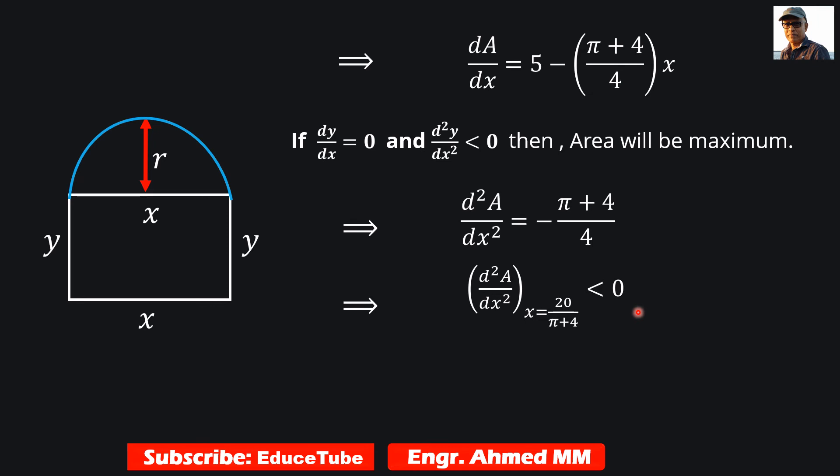So surely we can write it is less than 0. So once we get less than 0, it means for x equal to this value, area is maximum. So what will be the dimensions for the rectangle?